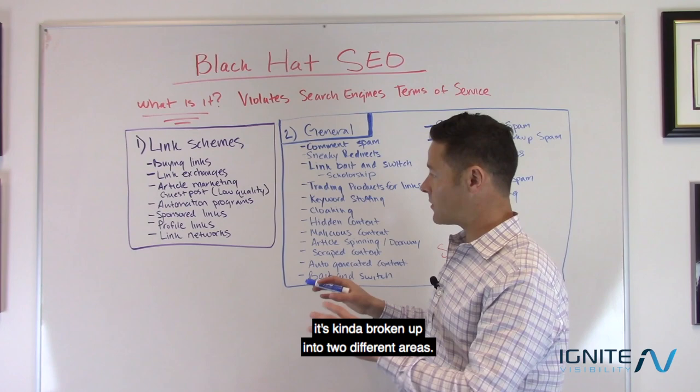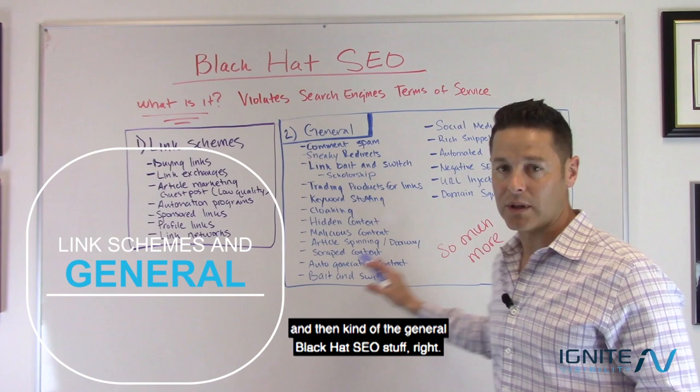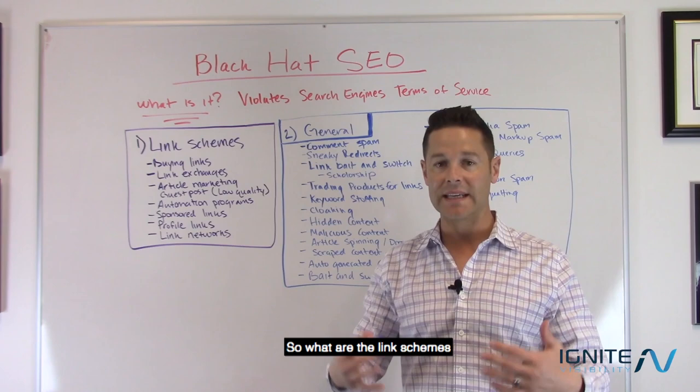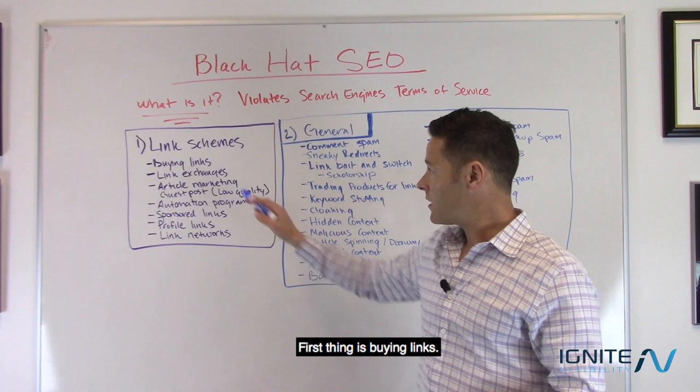Black Hat SEO is kind of broken up into two different areas: link schemes and then the general Black Hat SEO stuff. So let's start out with the link schemes — what are the link schemes that are considered against Google's terms of service?